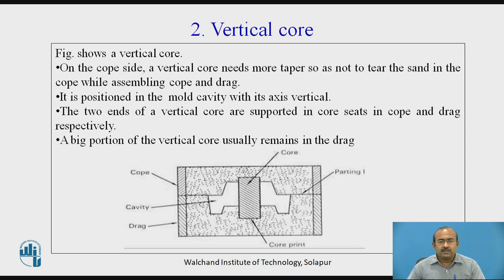The second type of core is the vertical core. On the cope side, a vertical core needs more taper so as not to tear the sand in the cope while assembling the cope and drag halves. It is positioned in the mold cavity with its axis vertical. The two ends of vertical cores are supported in core seats in the cope and drag respectively. A large portion of the vertical core usually remains in the drag.